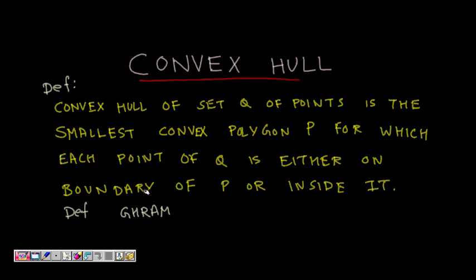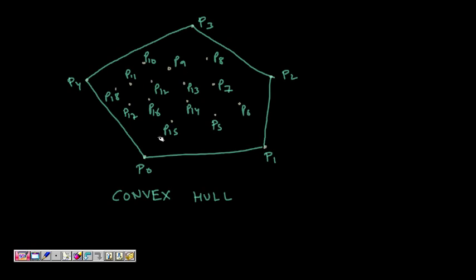Convex hull definition: the convex hull of a set Q of points is the smallest convex polygon P for which each point of Q is either on the boundary of P or inside it. We have a set of points p0, p1, p2, p3, p4 till p18, and from among them we choose a subset of points such that when we make a polygon out of it which has minimum sides, all other points lie inside it and these points are on the polygon.